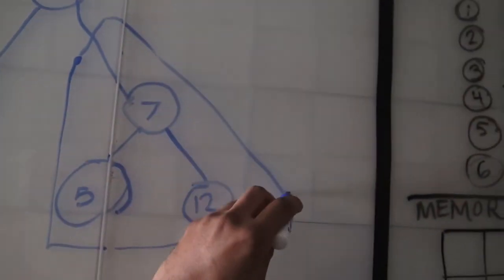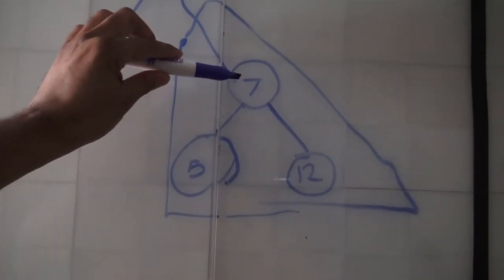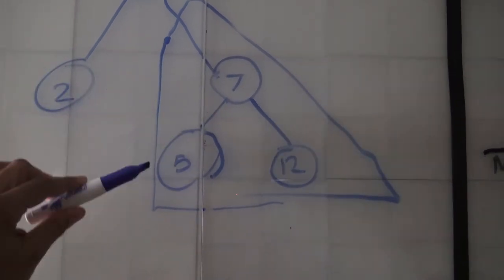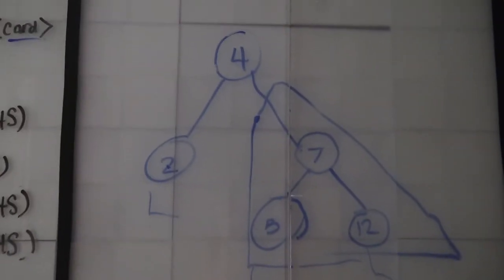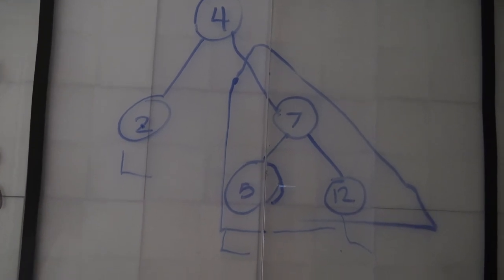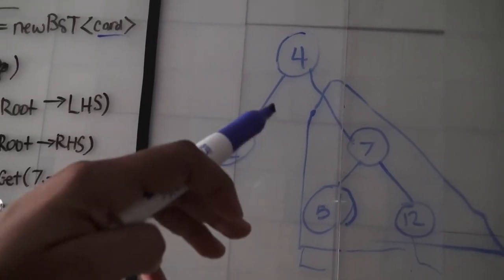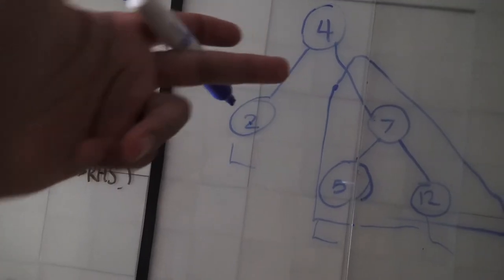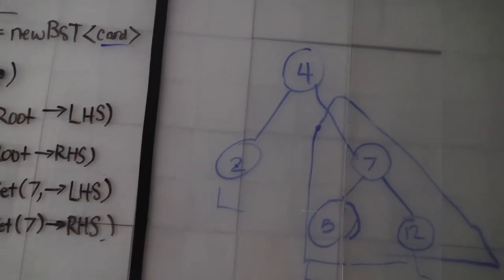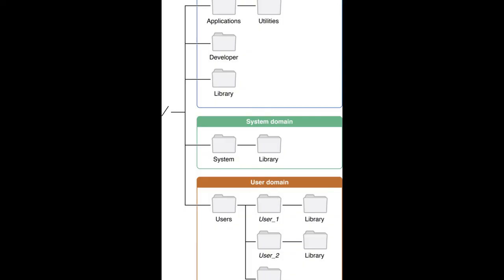Looking at this tree, we have 'fo' as the highest node. Notice the ordering: we have a 2 on the left which is less than fo, and a 7 on the right which is greater. The 7 is its own parent - and when you see something like this, this is a subtree. A subtree is right here with 7 as its parent node. The leaf nodes - 5 and 12 - don't have any kids. That's basically how trees work.